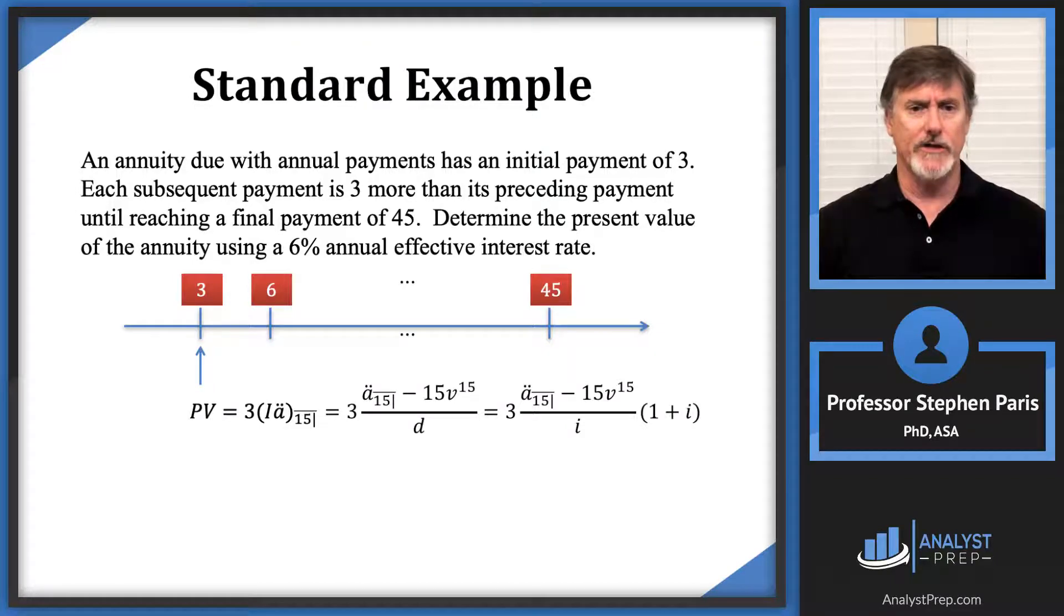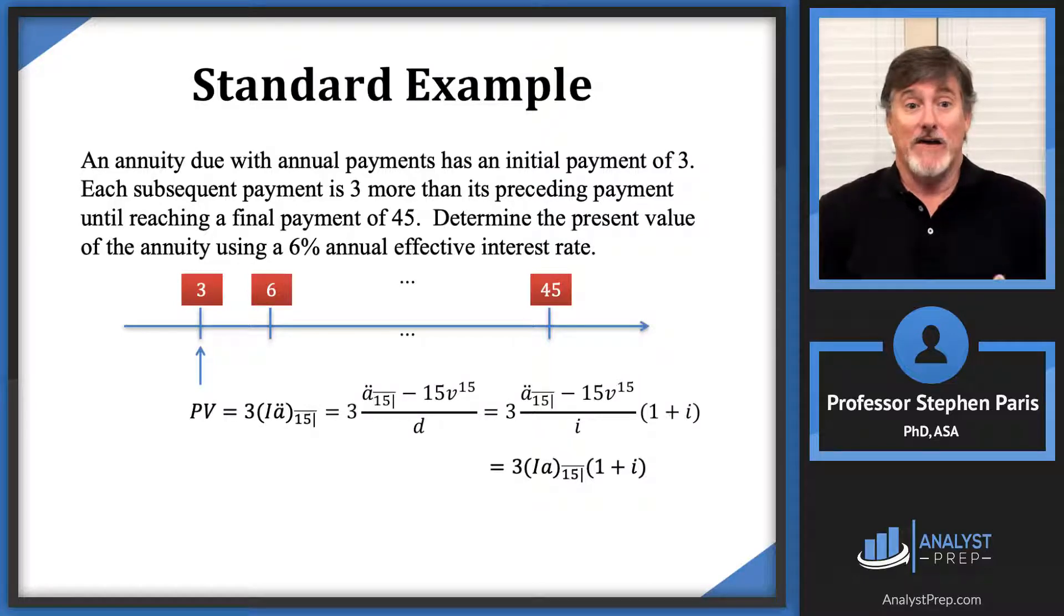I want to make an observation here: In this last expression, the fraction there is actually the closed-form formula for a cap i a angle 15. So technically what I'm doing here is finding the value of this annuity one period before the first payment, if you leave off the 1 plus i at the end, and then multiplying by 1 plus i to get the value at the time of the first payment.